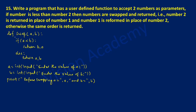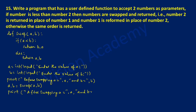Here I am going to call this particular function. I will write a, b equal to the function call swap, passing both arguments. Now I am going to print after calling this function — in double quotes write 'after swapping, a is equal to', put comma, write a, put comma, then in double quotes write 'and b is equal to', end the quote, put comma, write b and close the bracket.